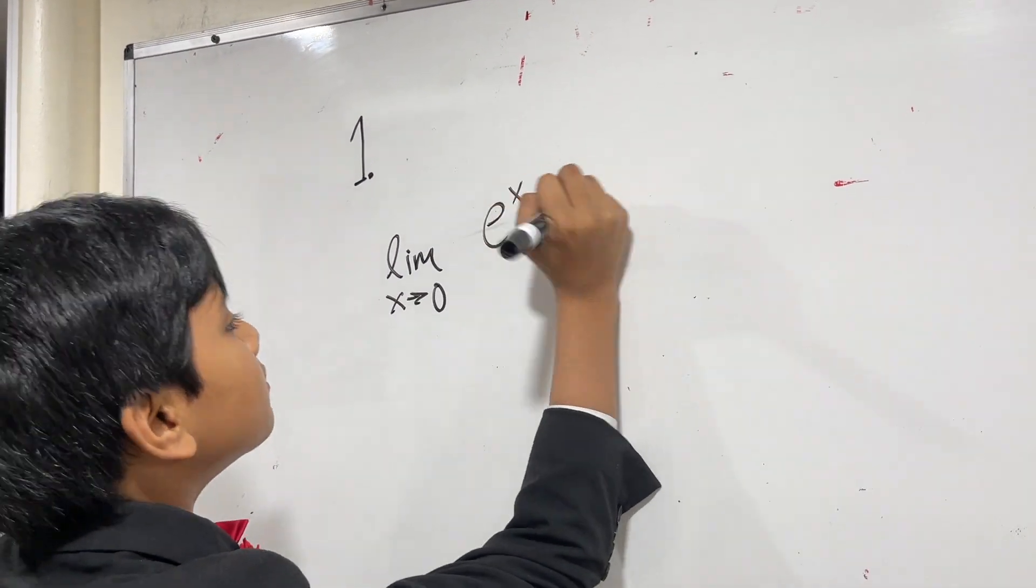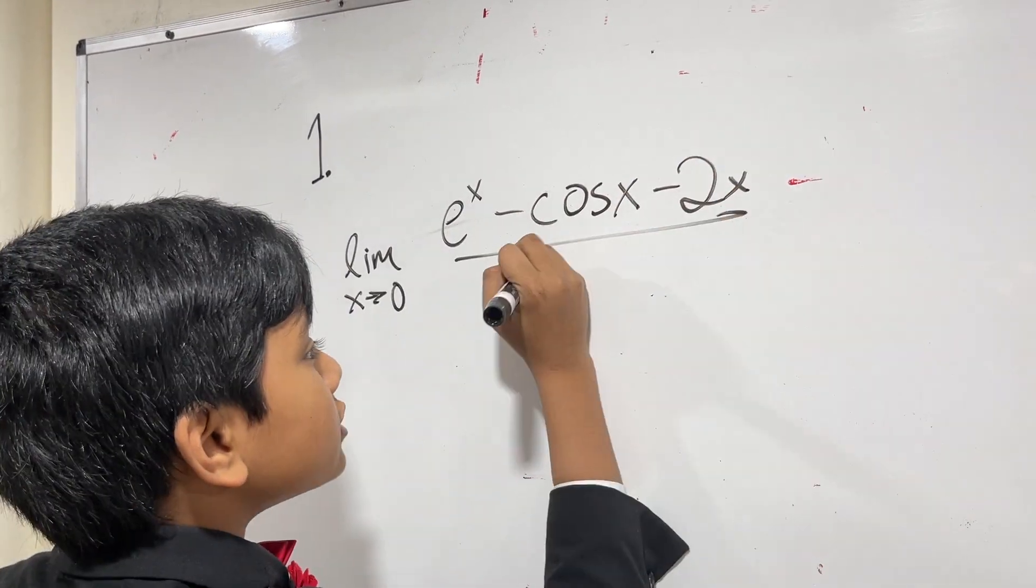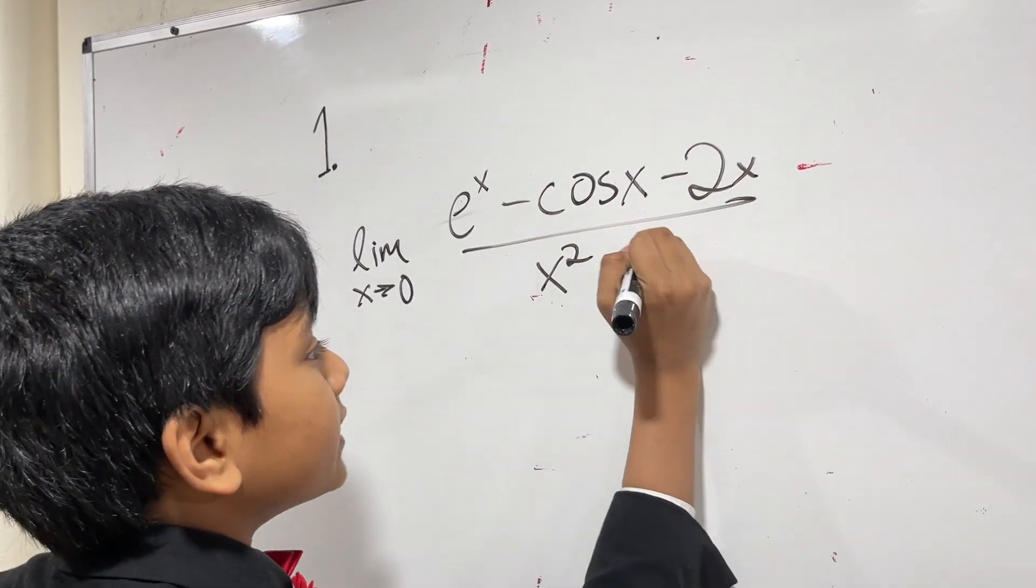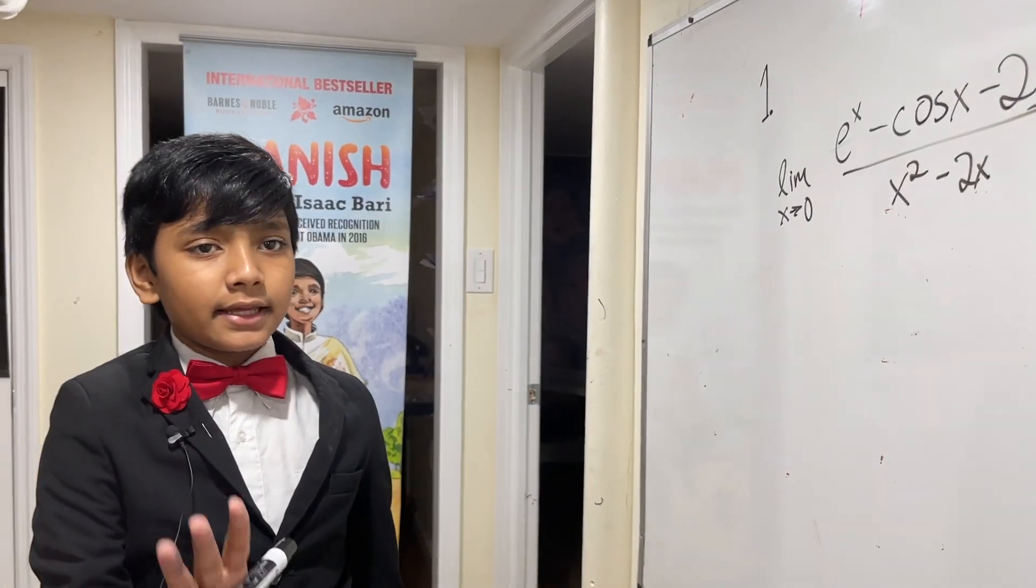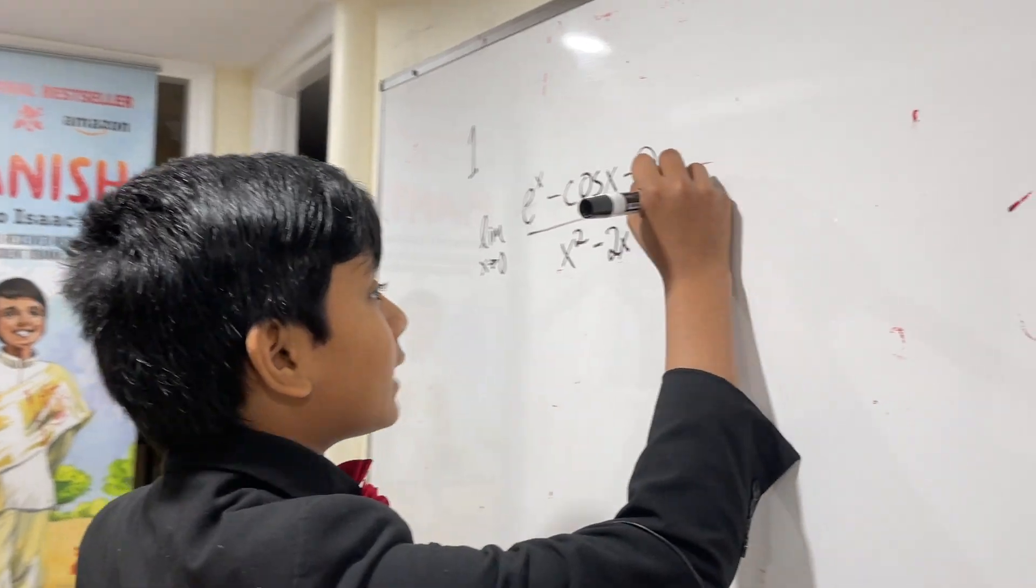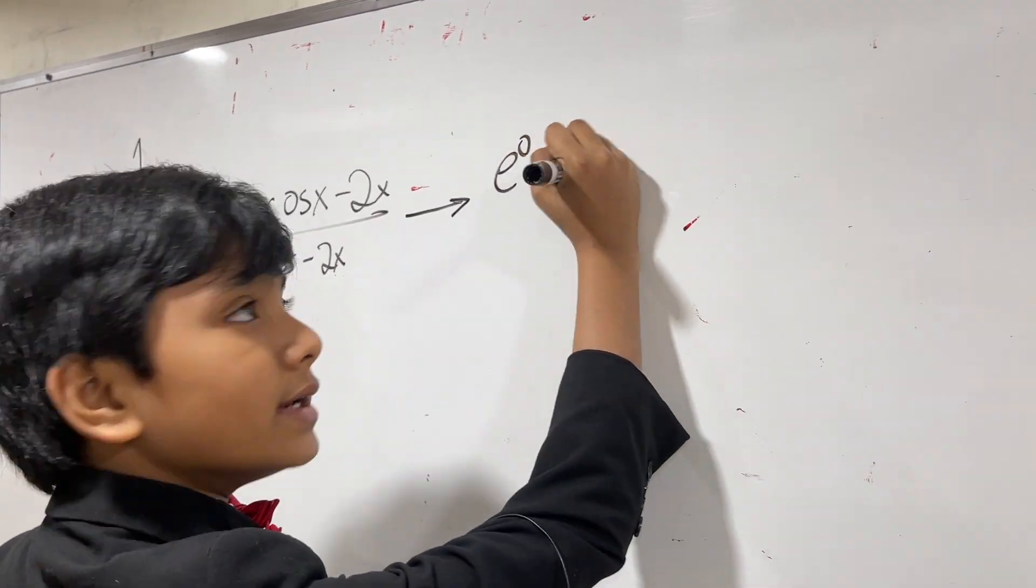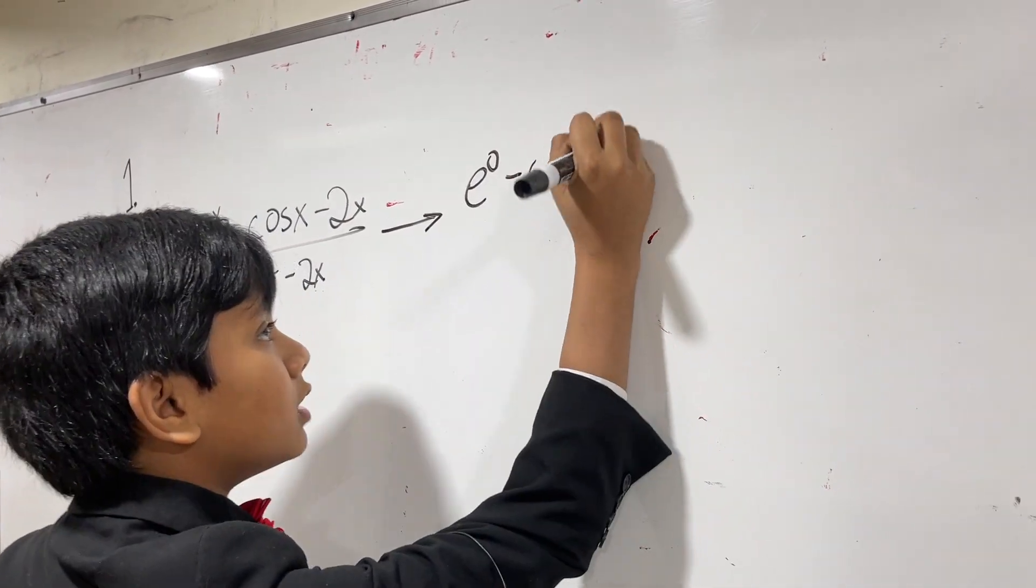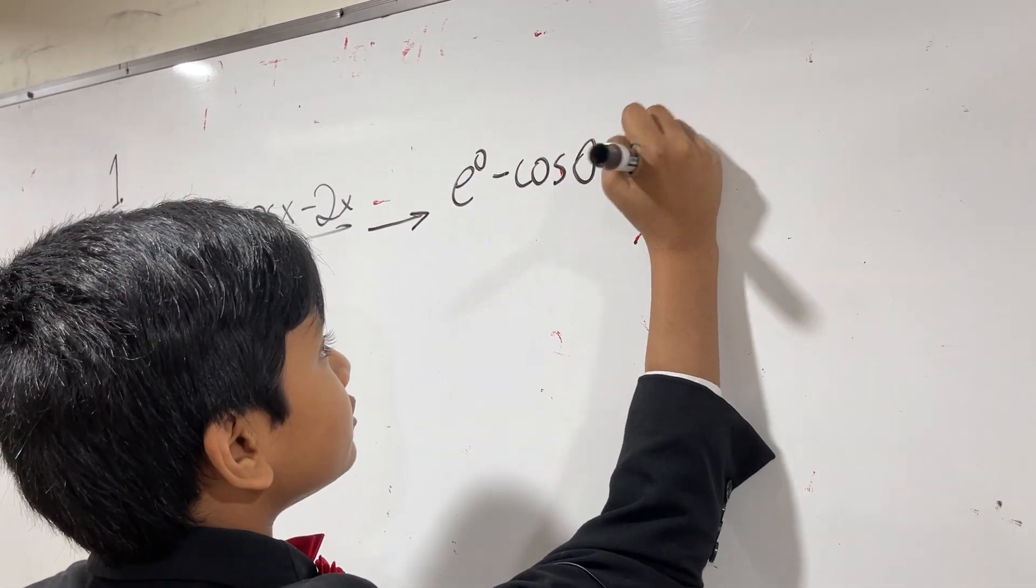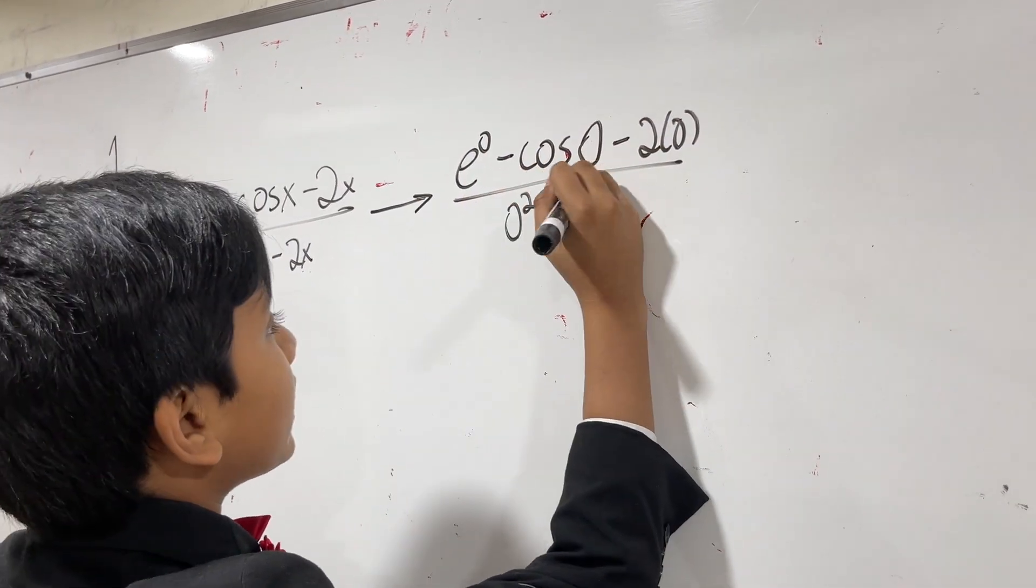Alright, so here's number one: limit as x approaches zero of e^x minus cosine x minus 2x over x squared minus 2x. Now you can see that if we just take the limit immediately and plug in zero like a barbarian, then we get e^0 minus cosine 0 minus 2 times 0 over 0 squared minus 2 times 0.